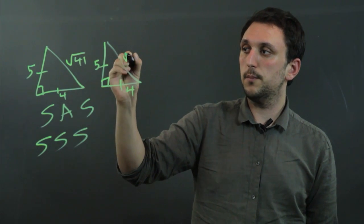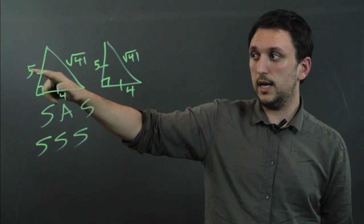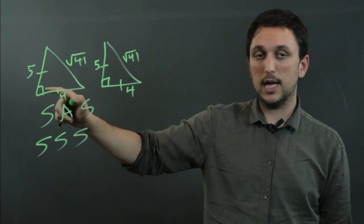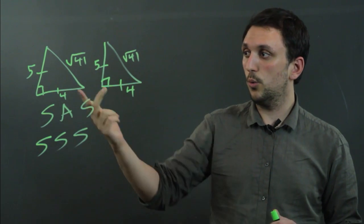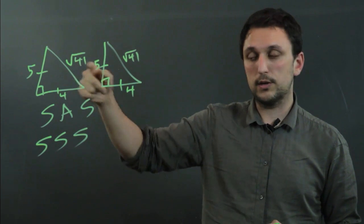So if we knew that this is also root 41, if all the sides are the same, it doesn't matter if we know the angle or not because all the sides are the same so all the angles have to be the same.